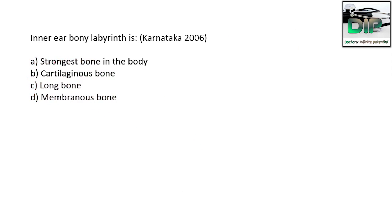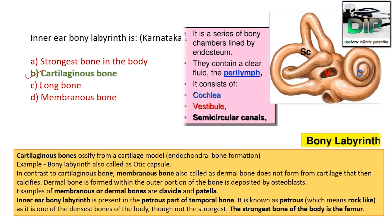Next question. The inner ear bony labyrinth — Option A: strongest bone in the body; Option B: cartilaginous bone; Option C: long bone; Option D: membranous bone. The correct answer is cartilaginous bone.